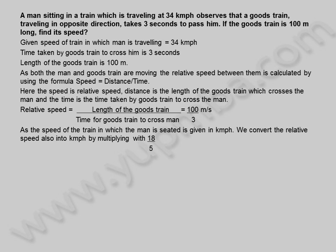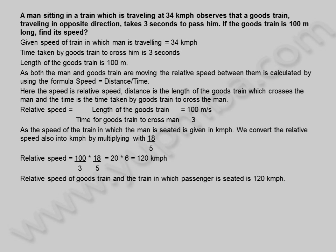As the speed of the train in which the man is seated is given in kilometers per hour, we convert the relative speed also into kilometers per hour by multiplying with 18 by 5. Relative speed is equal to 100 by 3 into 18 divided by 5, which is equal to 20 into 6, equal to 120 kilometers per hour. Relative speed of goods train and the train in which passenger is seated is 120 kilometers per hour.